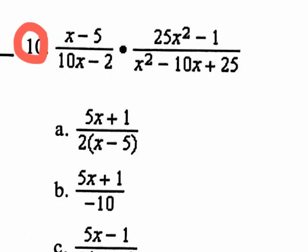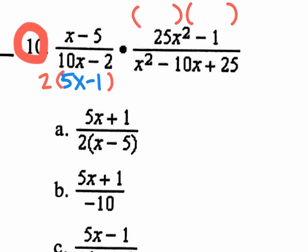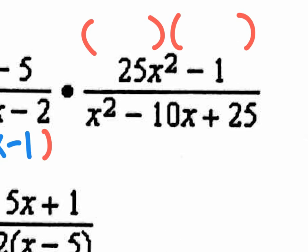Jumping to number 10 on last week's quiz. Factor the bottom left denominator: pull out a 2, leaving 5X − 1. Up on top, it's a difference of two squares — 25X² − 1. Factor it as (5X + 1)(5X − 1), because the square root of 25X² is 5X and the square root of 1 is 1. Since there's no middle term, one sign is plus and one is minus. That's the correct factored form of 25X² − 1.